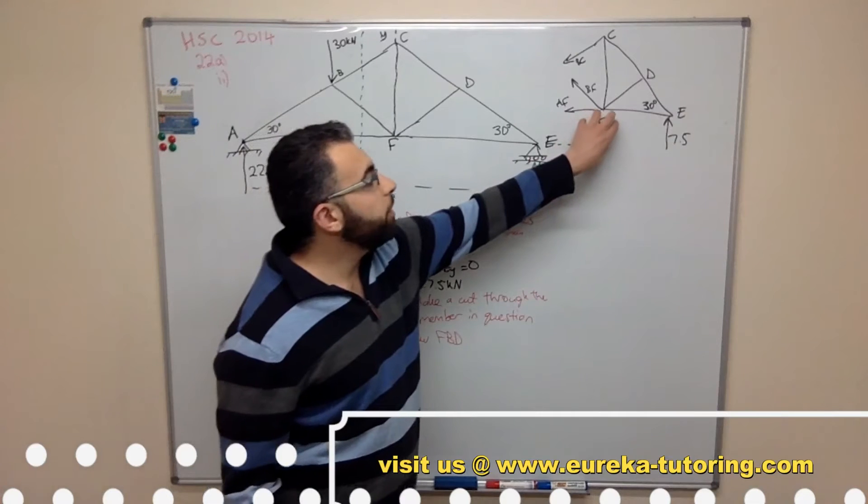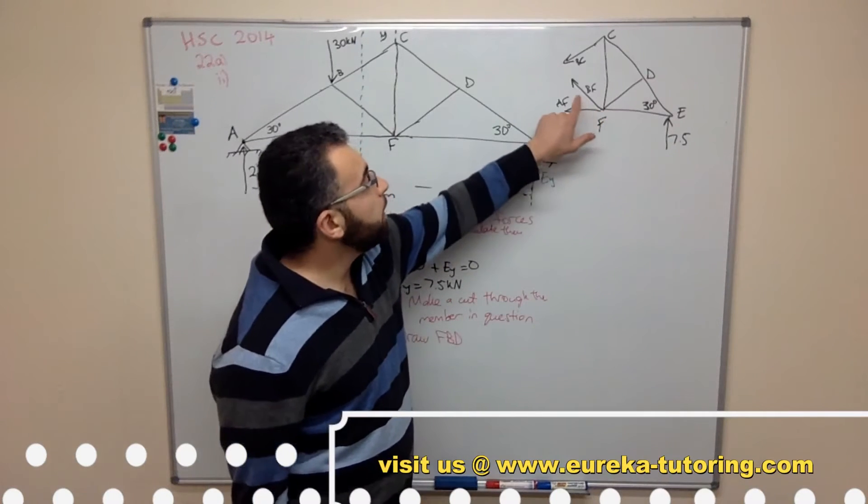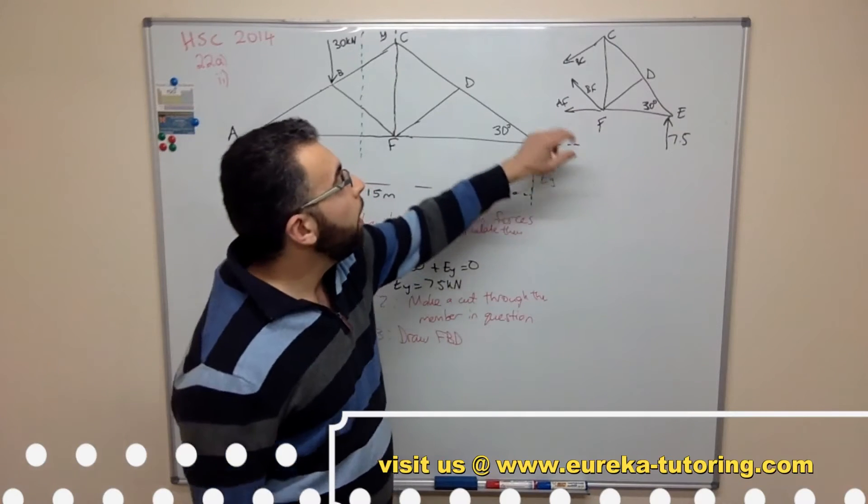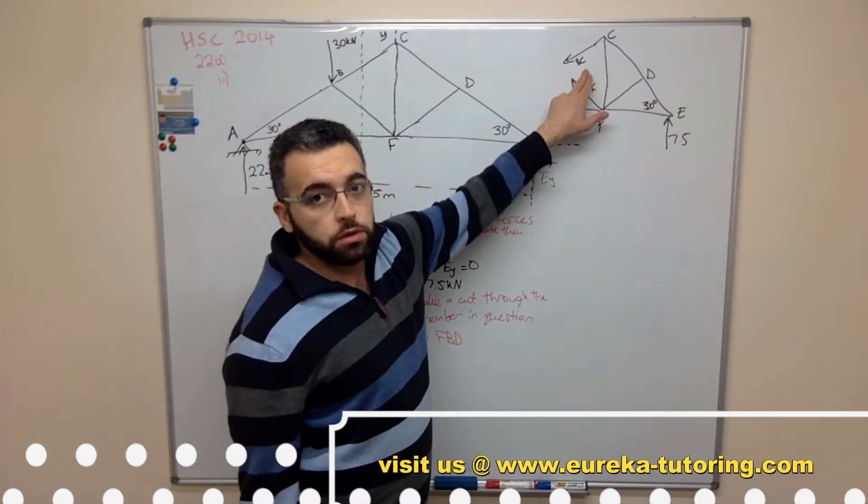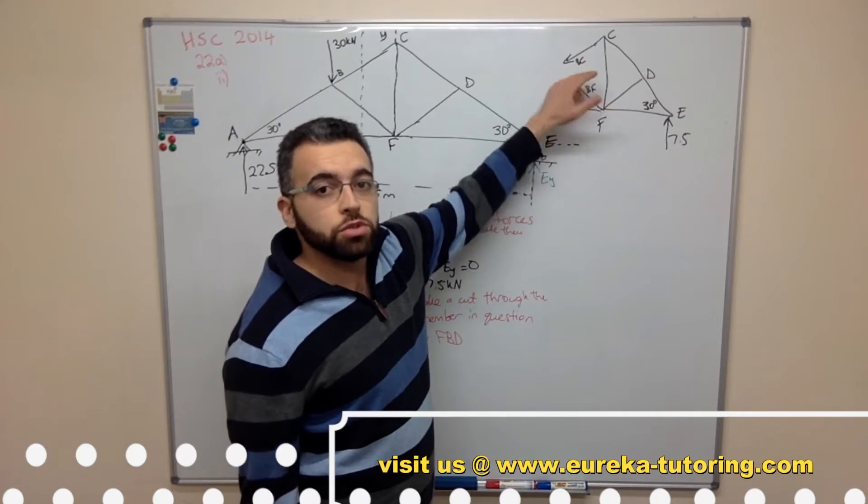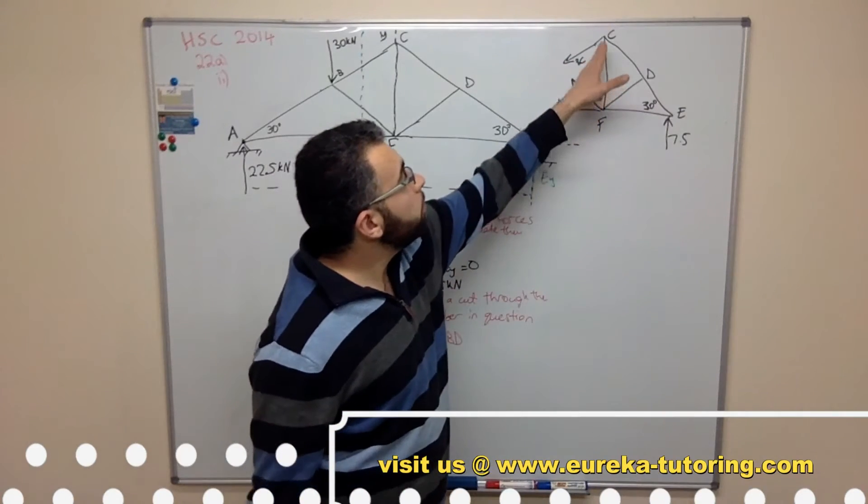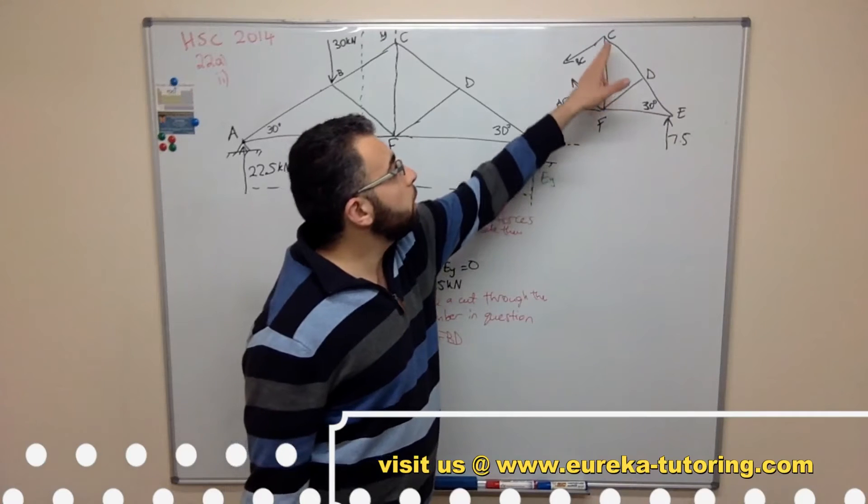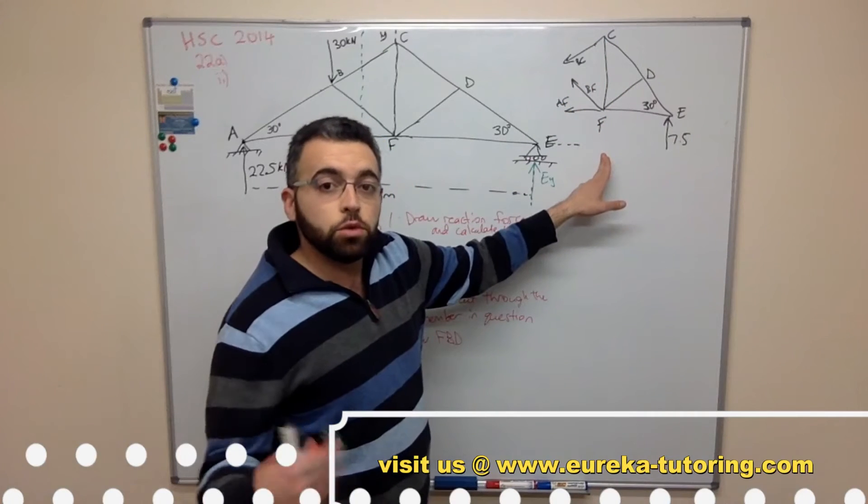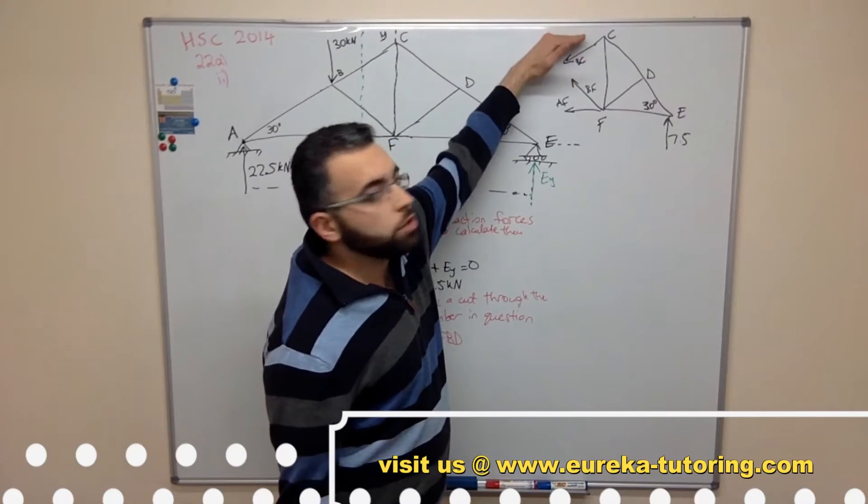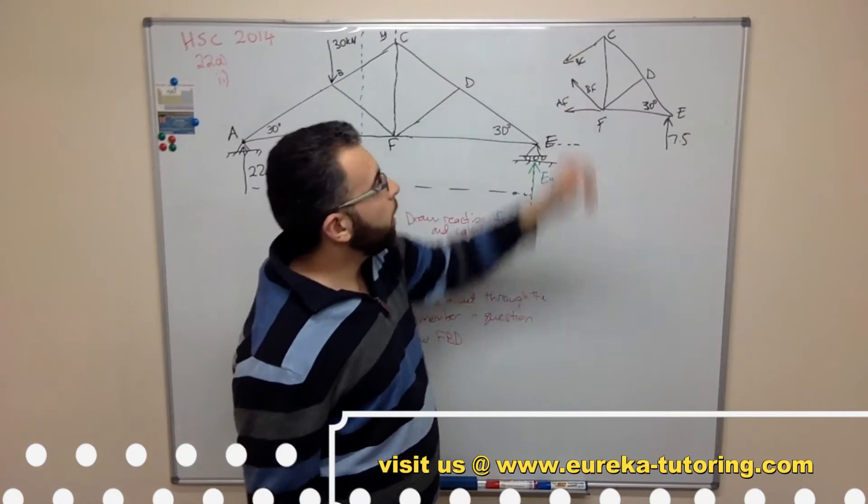Now by doing sum of moments around this point here F, it eradicates this force and this force because it goes through the point. But this force we can use. Now we need to break this force into its horizontal and vertical component. But for its vertical component we don't need to use it because it goes through the point. Hence it will not create a moment about point F. So instead we will look at the horizontal force of BC.